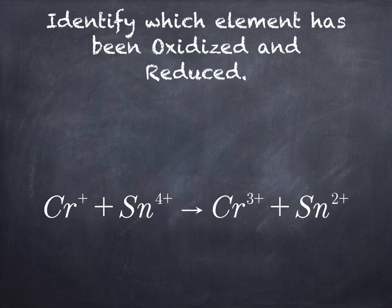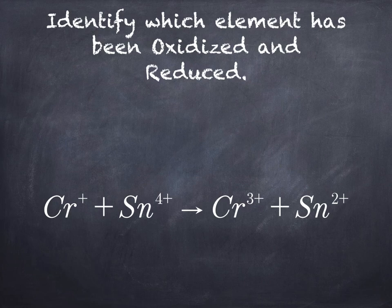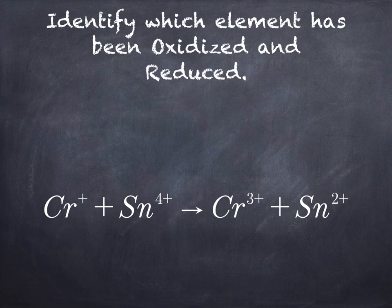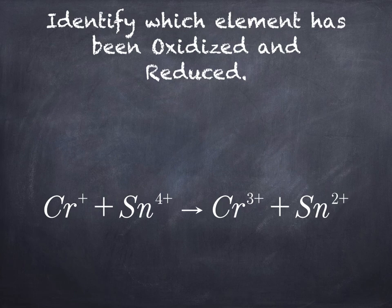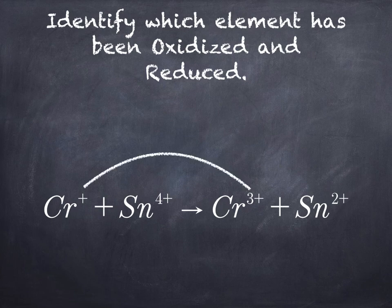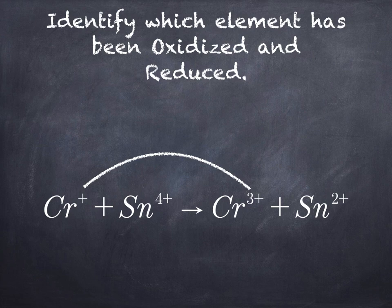The step in solving this is I like to look at the charges of each one of these ions. If you look at the charges, you'll notice that we have chromium on both sides and the charges are quite different. We have Cr+ and Cr3+. This should tell you something right away, something is going on.